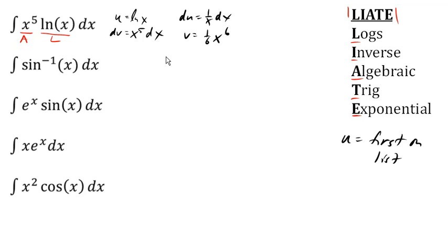And so we'll get u times v, minus integral of v du. And in this case, one of these x's will cancel with one of those, leaving us with something we can integrate.